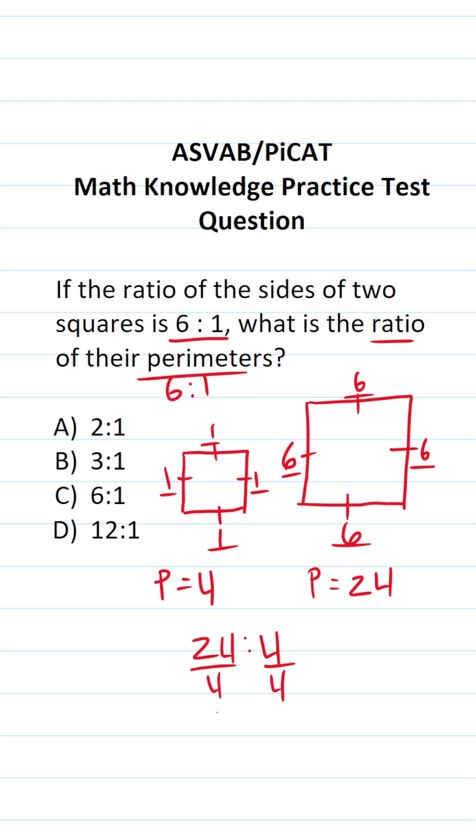Twenty-four divided by four is six. Four divided by four is one. We can see that the ratio of their perimeters is also going to be six to one. So the answer to this one is C.